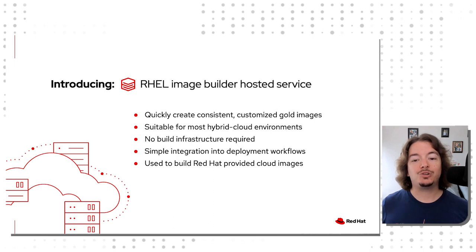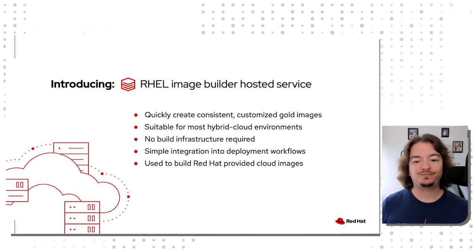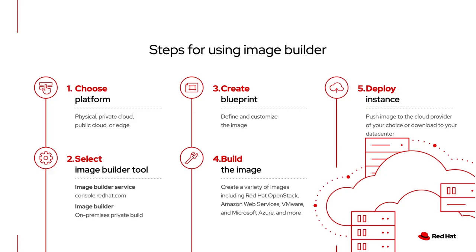This helps you ensure that you have a universal gold image ready to deploy anywhere at a moment's notice. So how does this process work? First, determine where your workload is going to run. Is it going to be a physical server in a data center, running on a public cloud, or deployed onto an edge device being shipped to a remote location?